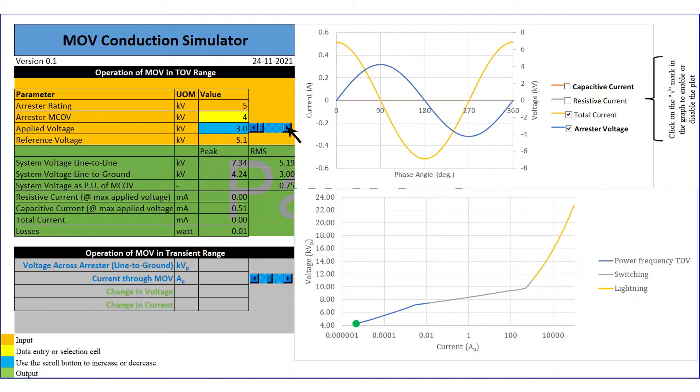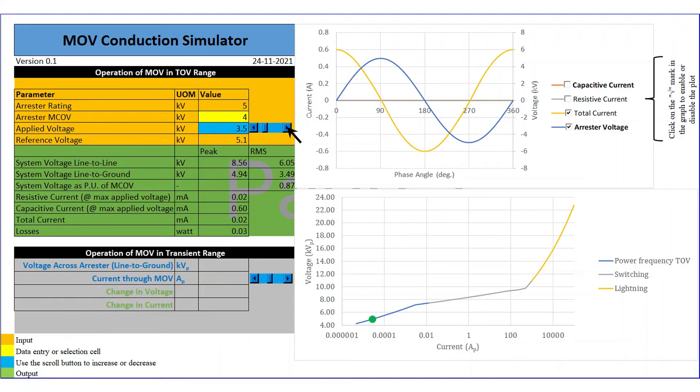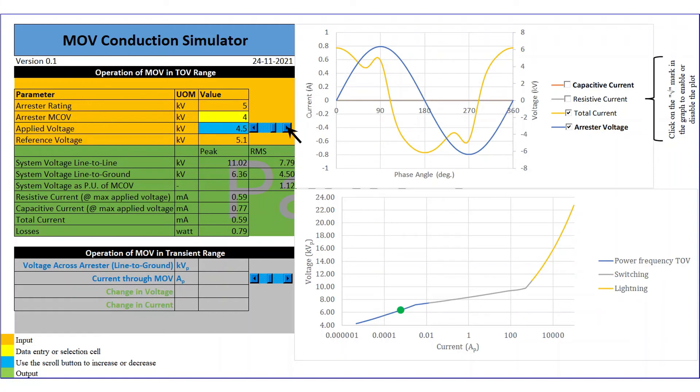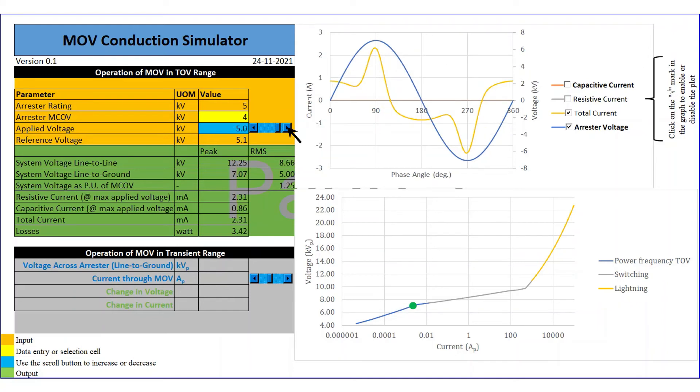Now you can see as we increase the applied voltage, how the current waveform is changing from pure capacitive, which is represented as a sinusoidal in shape and nearly 90 degrees out of phase from the voltage waveform into a different shape, which is a mix of capacitive and resistive current. Simultaneously, see how the cursor moves on the VI curve. It is also important to note that with a small change in the voltage, the current is rapidly changing. Watch this section of video once again for clarity.